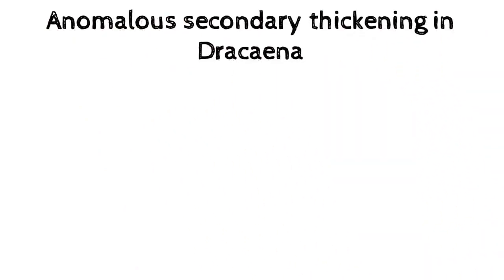This is the answer to another essay question of S1 Botany, which is one of the sure-choice questions. You can expect: anomalous secondary thickening in Dracaena. The growth in length of the stem and its branches is called primary growth. The increase in diameter of the axis as a result of the activities of lateral meristem is called secondary growth.